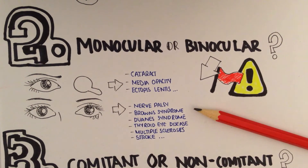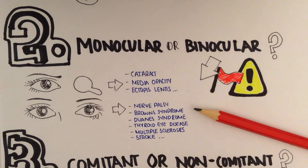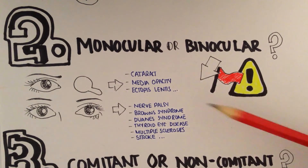So we're talking about nerve palsies, Brown's, Duane's, thyroid eye disease, multiple sclerosis, stroke, and the list goes on and on. This is by no means an exhaustive list.